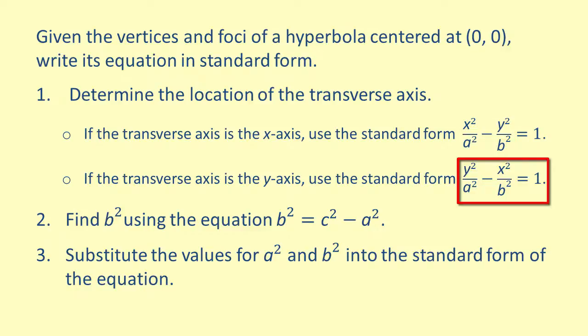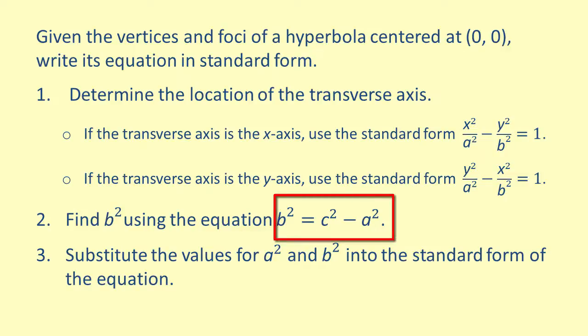You'll notice that we've talked about given points using the variables a and c, but the equations use the variables a and b. This is because we will most likely need to solve for b using a and c. This can be done by squaring the values of a and c and subtracting a squared from c squared. Once we have these values, we are able to write the equation of a hyperbola in standard form.